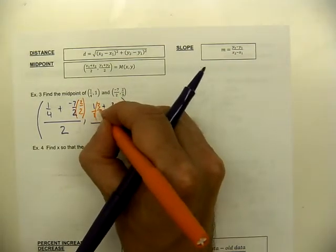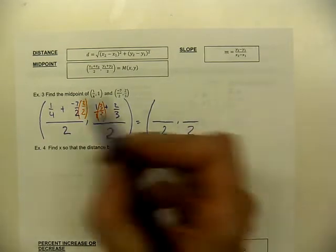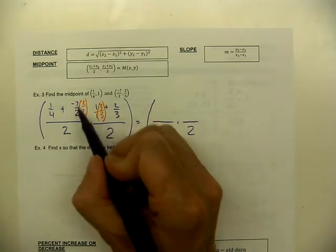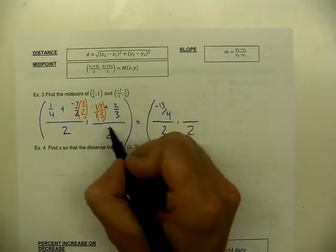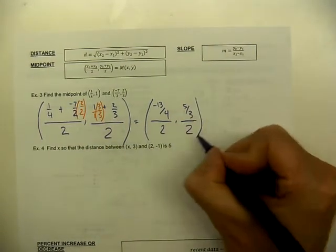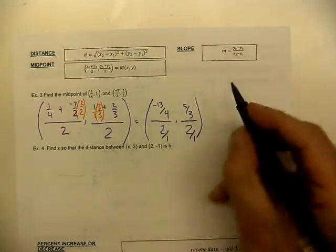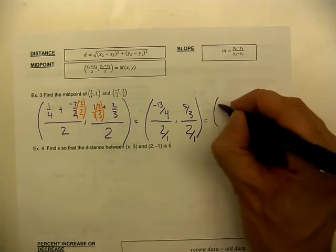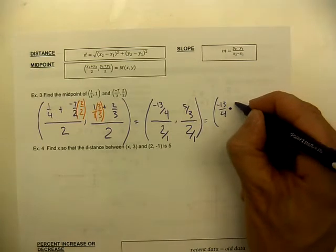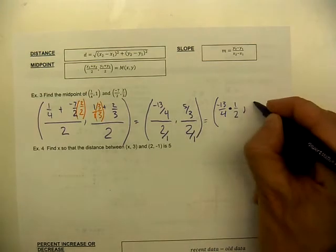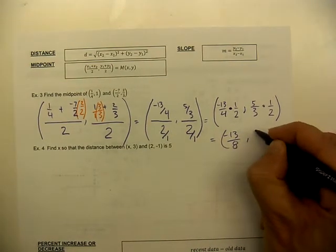With a common denominator of four for the x-coordinates: one-fourth minus fourteen-fourths equals negative thirteen-fourths. For the y-coordinates, a common denominator of three gives three-thirds plus two-thirds equals five-thirds. Dividing by two means multiplying by the reciprocal one-half. So the x-midpoint is negative thirteen-fourths times one-half equals negative thirteen-eighths, and the y-midpoint is five-thirds times one-half equals five-sixths. The final midpoint is (−13/8, 5/6).